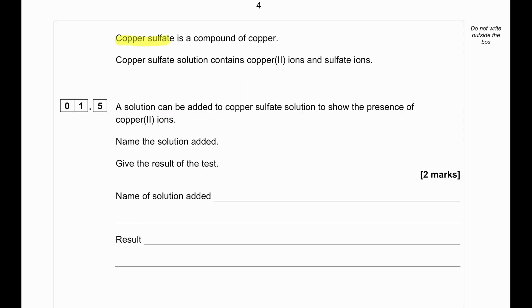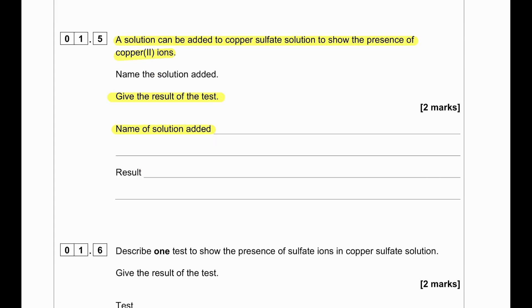Copper sulfate is a compound of copper. Copper sulfate solution contains copper 2+ ions and sulfate ions. A solution can be added to copper sulfate solution to show the presence of copper 2+ ions. Name the solution that is added. Give the result for the test. To detect copper ions we can add sodium hydroxide solution. Sodium hydroxide reacts with copper 2+ ions to produce a blue precipitate.